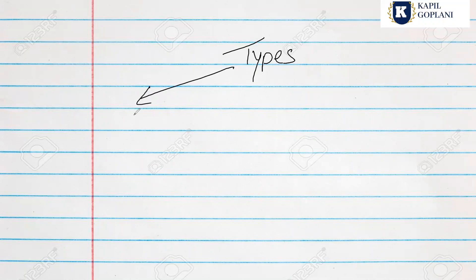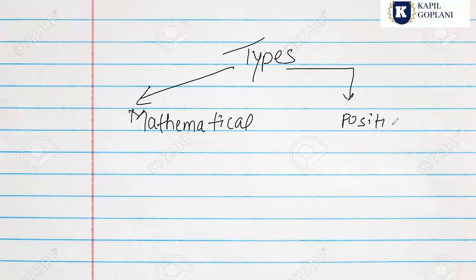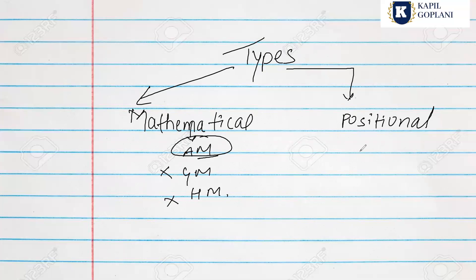Now, what are the types of averages? There are two main categories: Mathematical Averages and Positional Averages. Mathematical averages include Arithmetic Mean, Geometric Mean, and Harmonic Mean. Positional averages include Median, Mode, and Partition Values such as Quartiles (Q1), Percentiles, and Deciles.